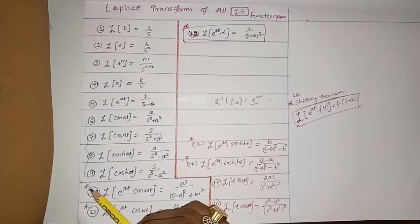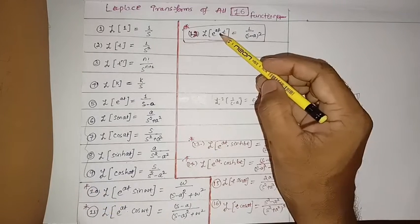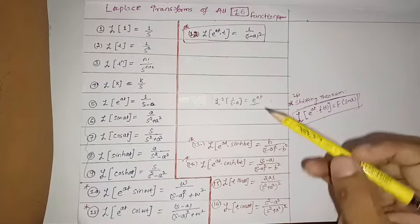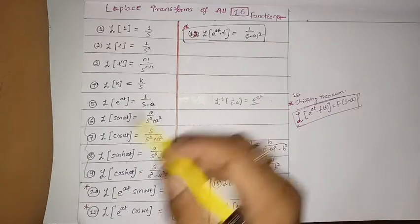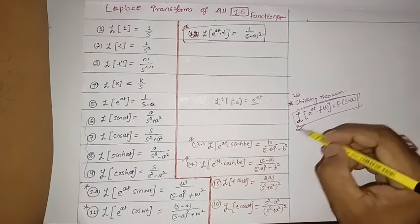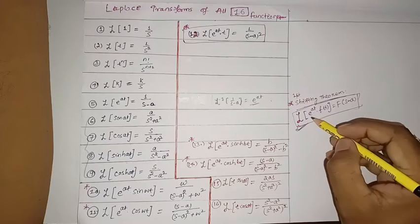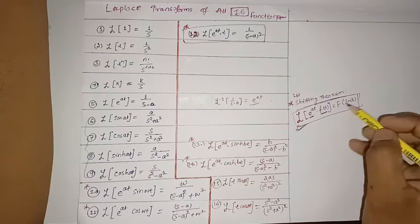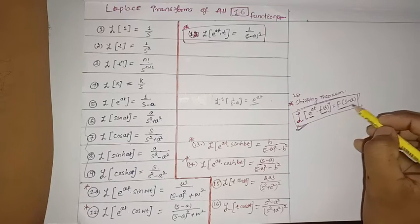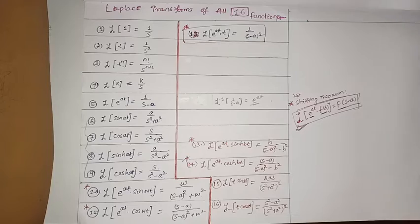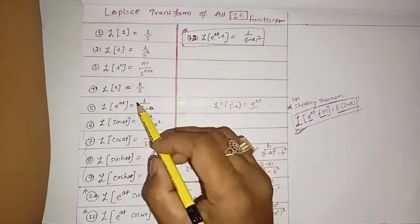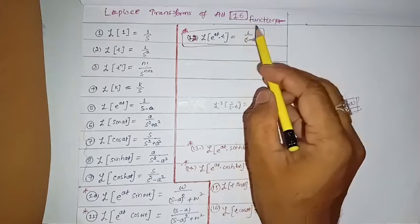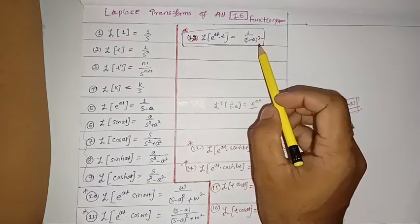I have marked a star on the 10th, 11th, 12th, 13th, and 14th functions because these five follow the first shifting theorem: if you multiply a function by e^(at), the Laplace transform becomes F(s-a). We already discussed this in our last class. For example, the Laplace transform of e^(at)·t will be 1/(s-a)².